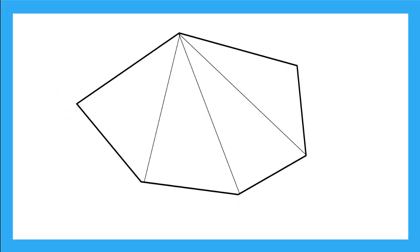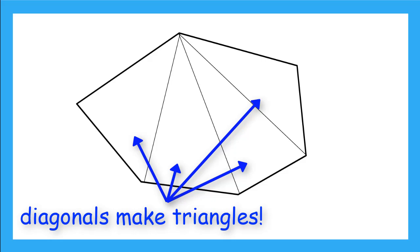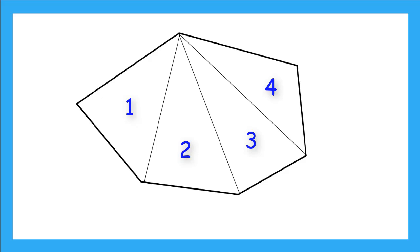Do you notice anything special about the shapes these diagonals make in our hexagon? Yeah. That's right. They're triangles. How many triangles can you count? One, two, three, four.